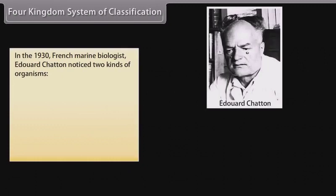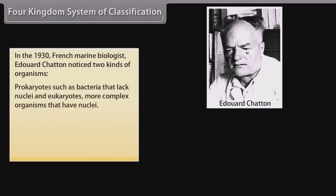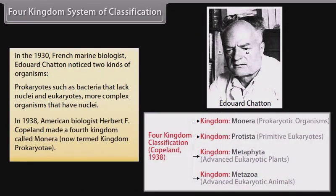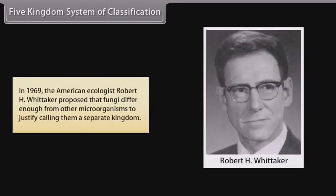Four kingdom system of classification: in the 1930s, French marine biologist Edward Chatton noticed two kinds of organisms — prokaryotes such as bacteria that lack nuclei, and eukaryotes, more complex organisms that have nuclei. In 1938, American biologist Herbert F. Copeland made a fourth kingdom called Monera, now termed kingdom Prokaryota.